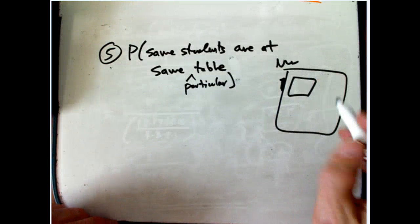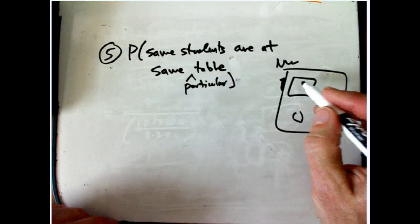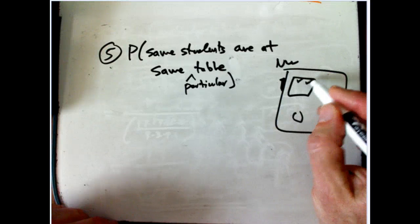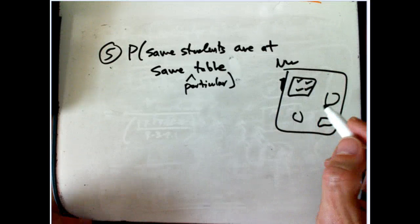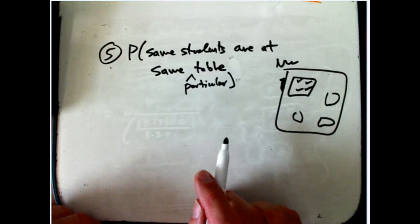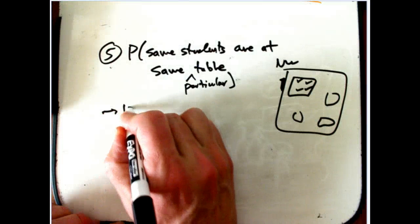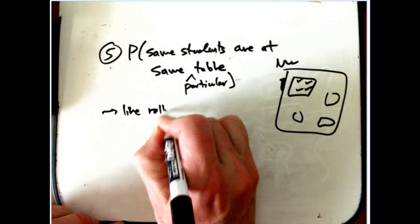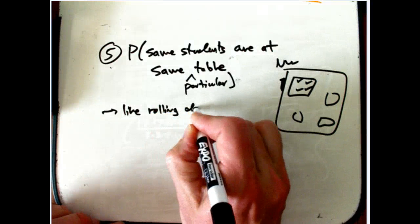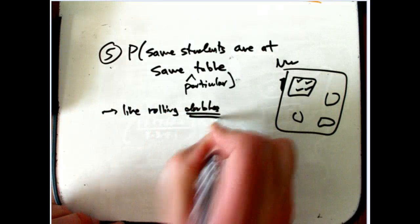And what I'd like to know is what's the probability if one week I had one ordering of the students, one layout of the students at the various tables, what's the probability that I get the same students, not in the same order, but at that same table? This is very much like the probability of rolling doubles.